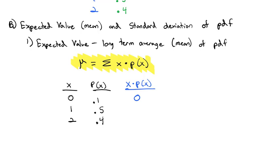0 times 0.1 is 0, 1 times 0.5 is 0.5, and 2 times 0.4 is 0.8. And if I add those together, that will give me the sum of the X's times the P(X)'s, which is 1.3.